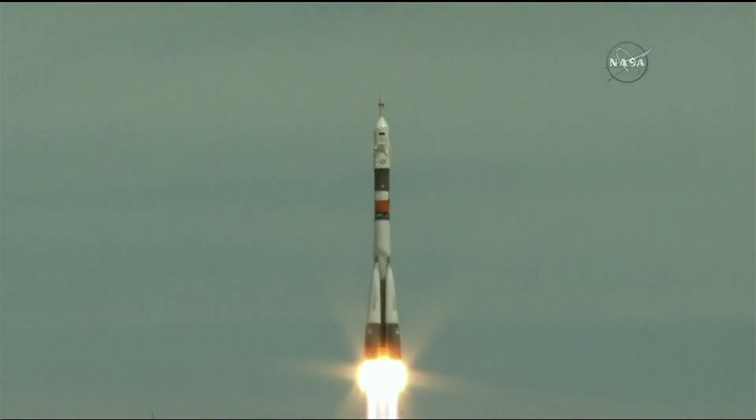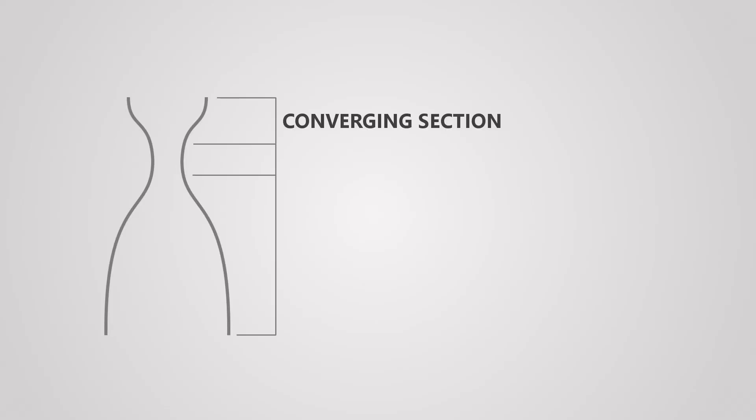There are three sections of a converging-diverging nozzle: the converging section, which starts at the combustion chamber and gets more narrow; the throat, which is the most narrow part of the nozzle; and the diverging section, which starts from the throat and expands to the nozzle exit.